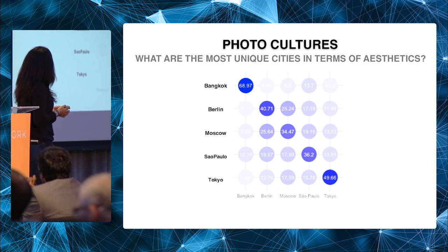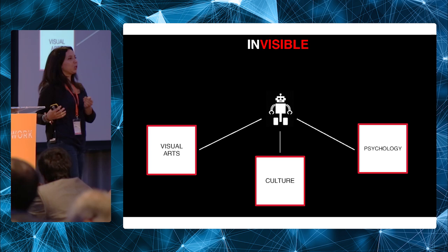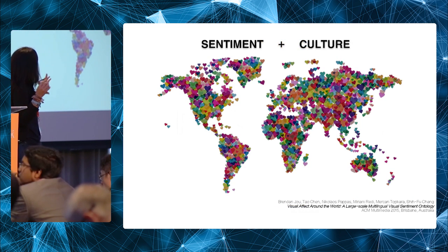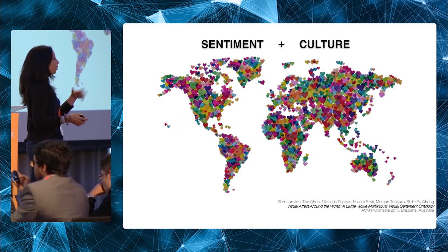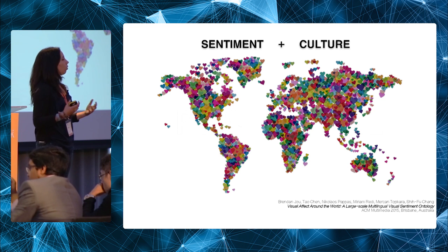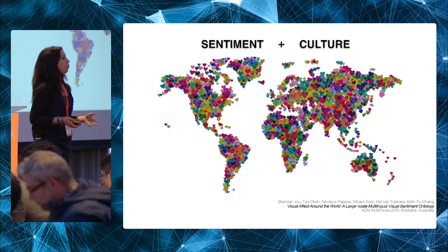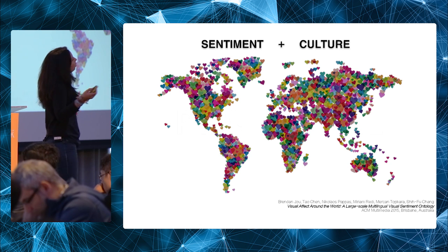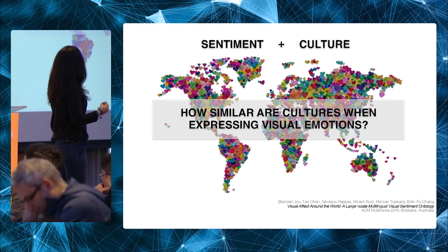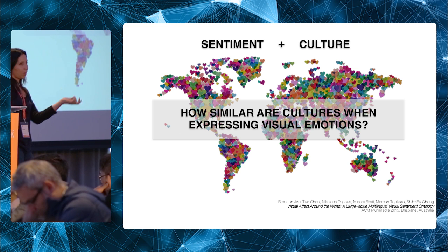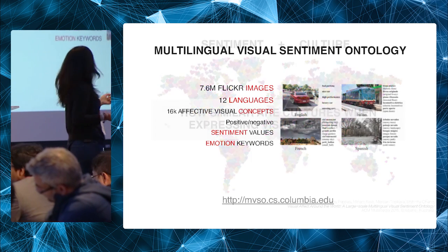As the final part of the talk, I'll go in the same direction but more toward the psychology side — work done with researchers from Columbia, IBM, and other institutions to study the impact of culture on visual emotion perception using an algorithmic approach. Sentiment is very subjective, and we want to understand how culture impacts emotion perception in visual data — answering questions like how similar cultures are when expressing visual emotions, a question psychologists are still debating.